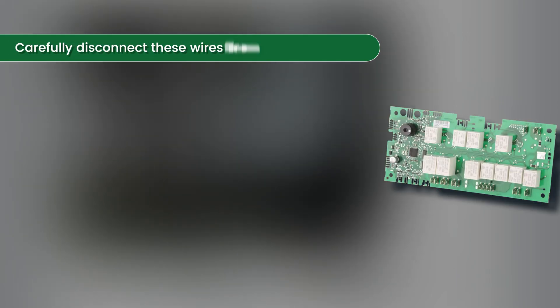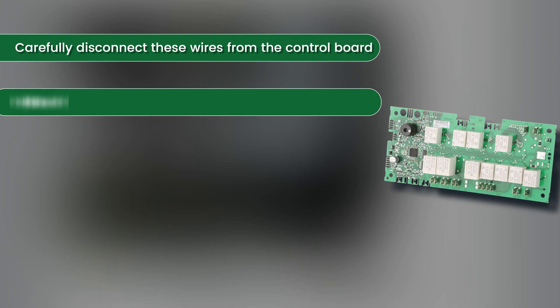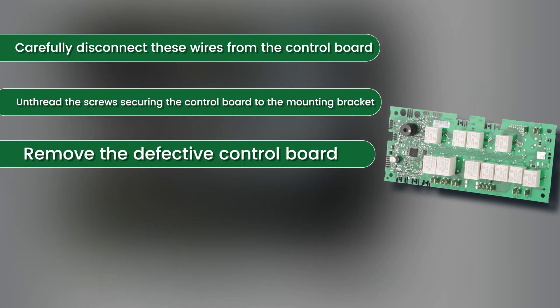Carefully disconnect these wires from the control board and unthread the screws securing the control board to the mounting bracket. Remove the defective control board.